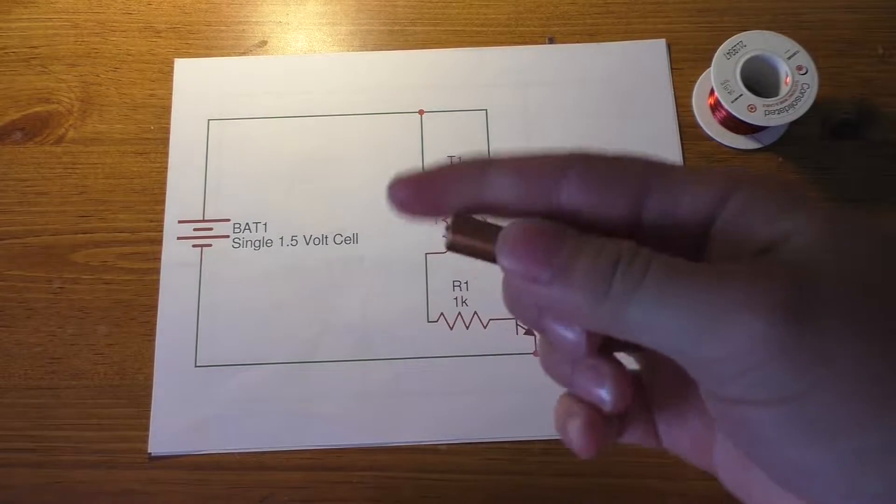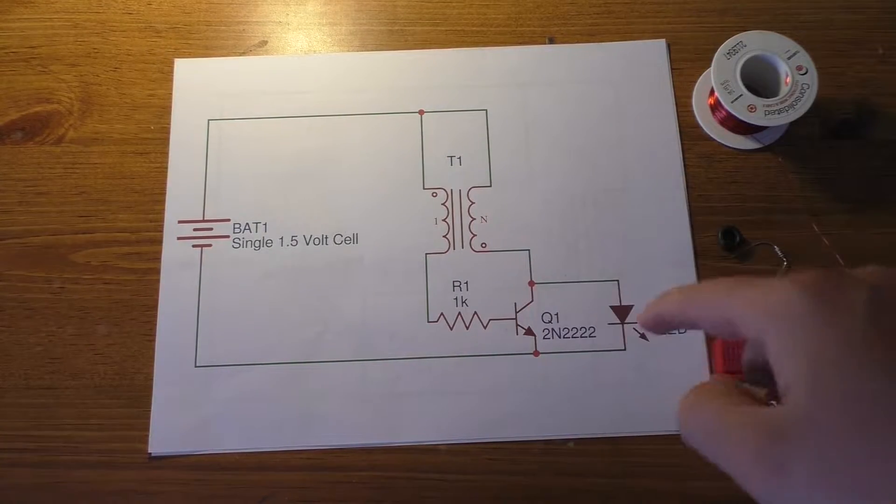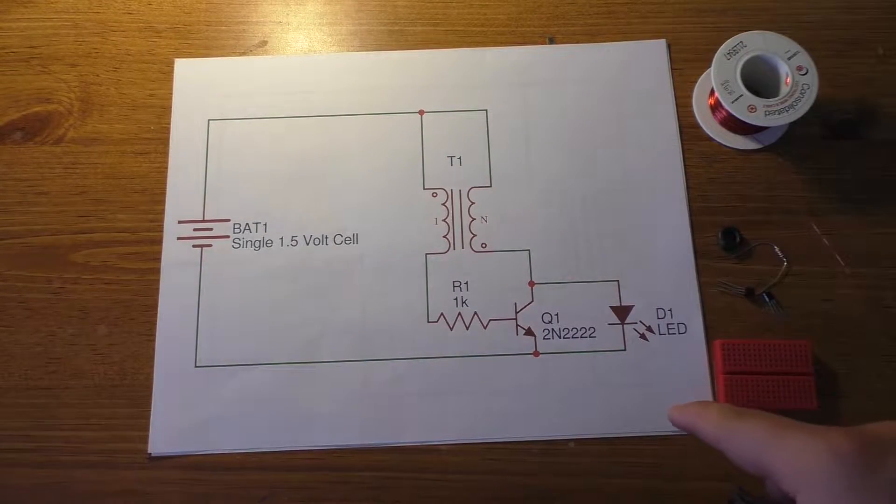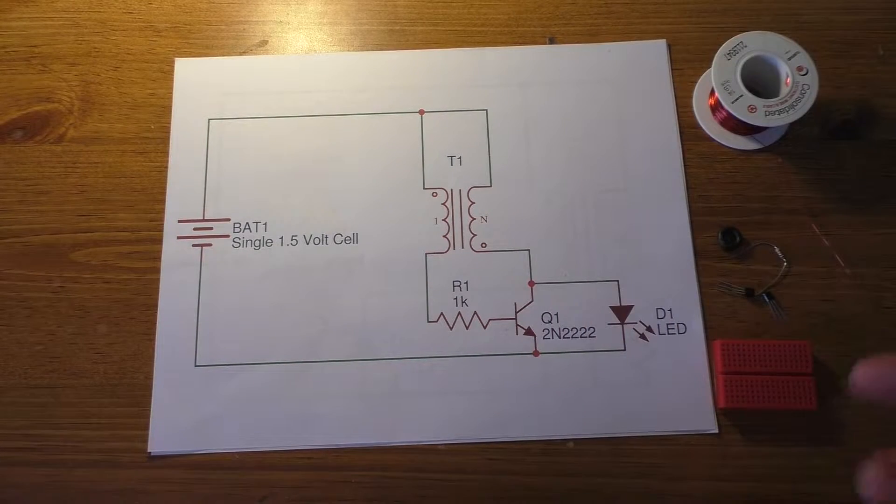So basically you're going from about 1.5 volts to 3 volts, and this ends up making a boost converter. It's unregulated, and the LED's just kind of stuck across the output.